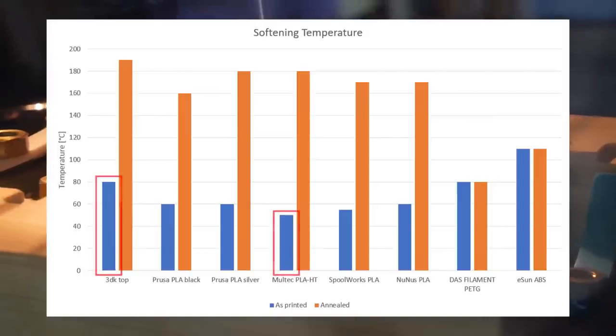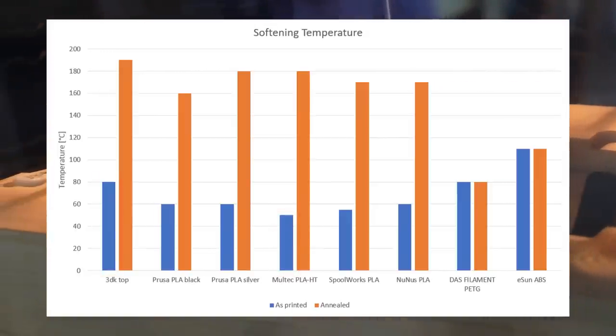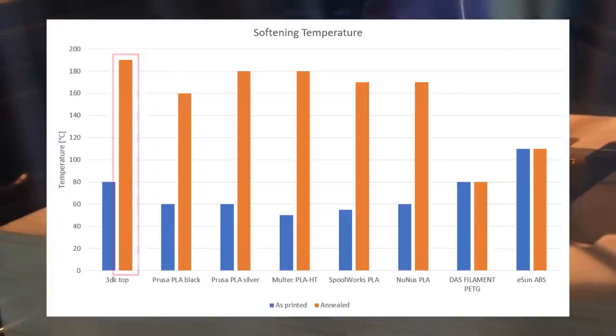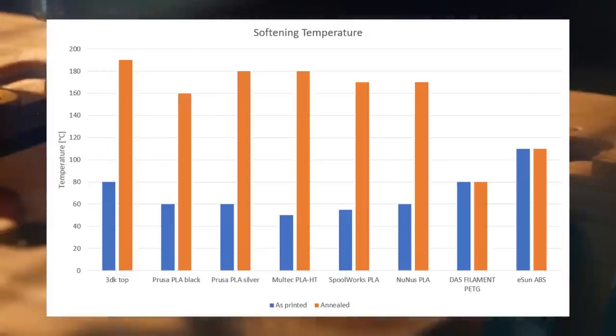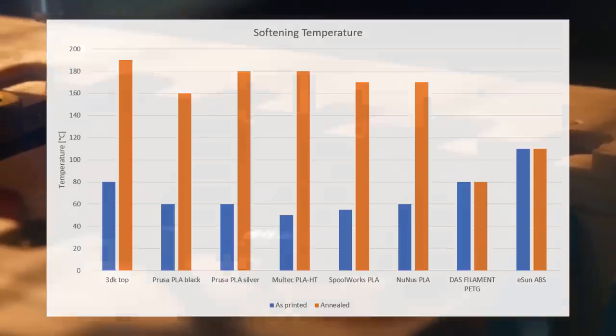Annealing PETG and ABS does not change the temperature resistance of the materials. The special high temperature filaments also don't do well if they are unannealed, though if you heat treat them and are able to cope with the shrinkage they outperform everything. The PLAs did not fail before 170 degrees and I wasn't able to get the 3DK high temperature material to fail at all.